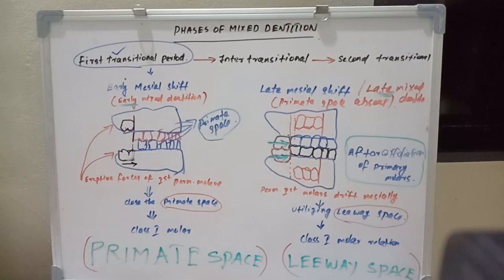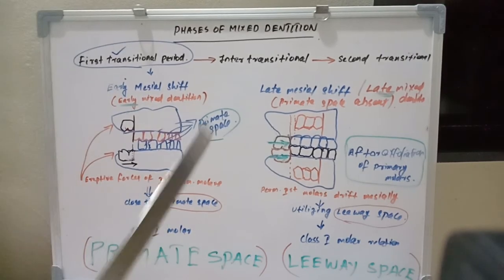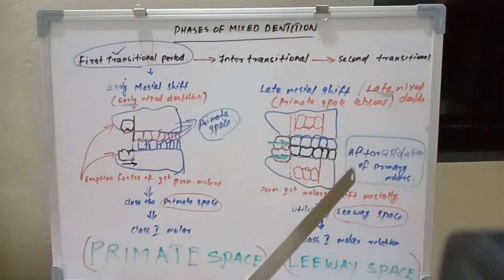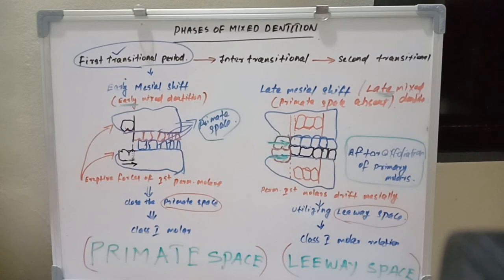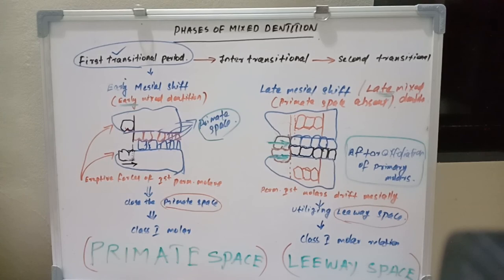The basic difference between early and late mesial shift is that early mesial shift utilizes the primate space, while late mesial shift utilizes the leeway space. That's all about early mesial shift and late mesial shift and how permanent molars reach their ultimate position in the adult oral cavity. I will come up with a new video — thank you.